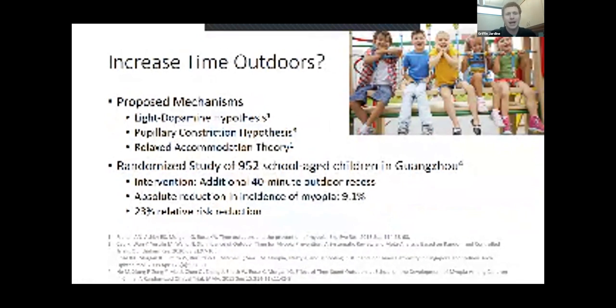What are the mechanisms behind outdoor time and decreased incidence of myopia? The leading hypothesis is this light dopamine theory, which is that UV radiation, and not all forms of light but mainly UV radiation, stimulates dopamine release in the retina which slows axial growth. The absence of which causes axial elongation. A couple other theories: one is pupillary constriction causing less blur on the retina. Another is just that when we're outside we're not accommodating as much. The light dopamine theory has the most robust data behind it and has been proven in several animal models.